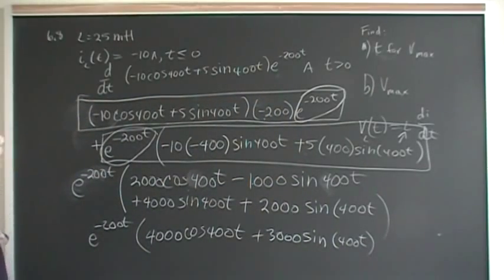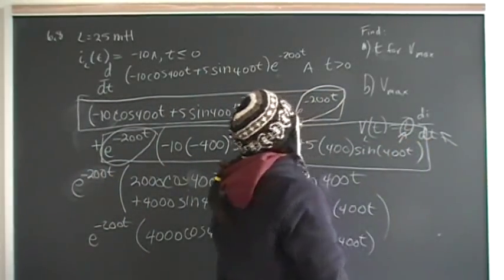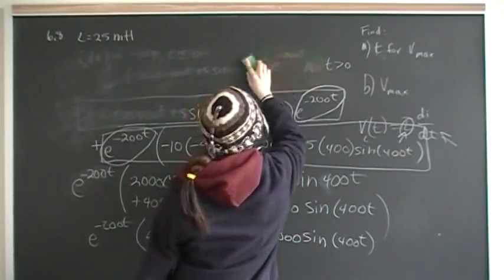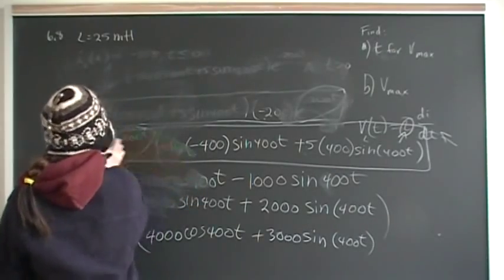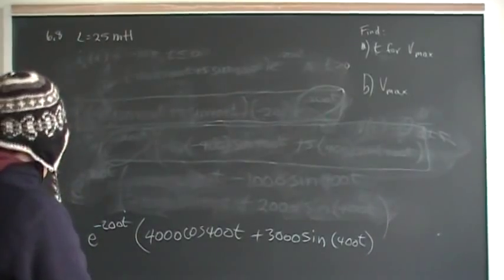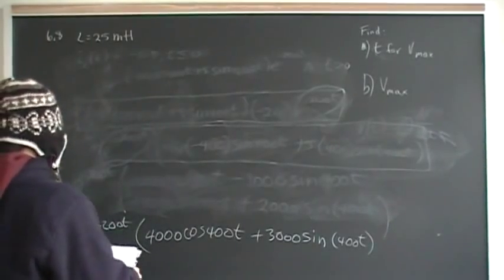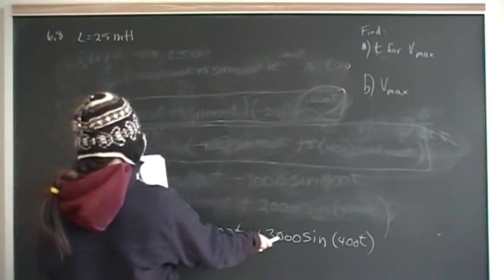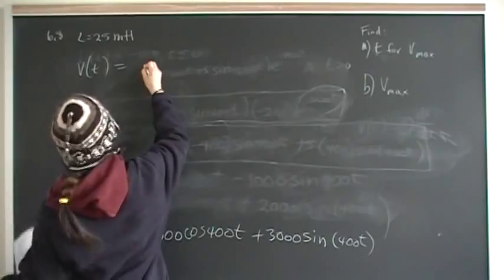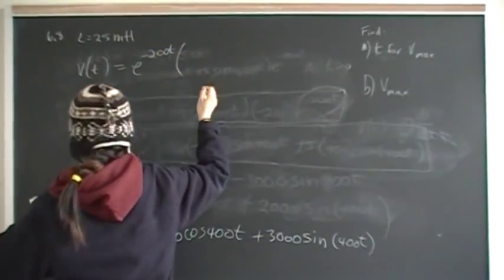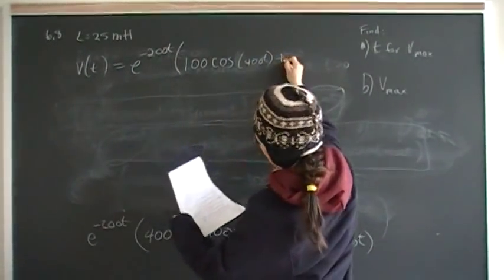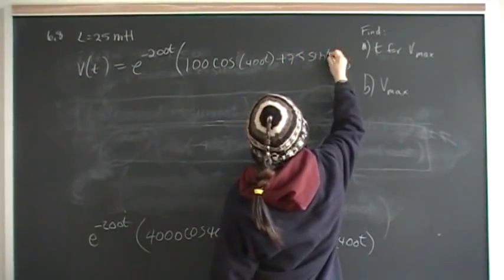Remember that was only dI/dt. Now we have to multiply through by 25 millihenries to get the actual voltage. Multiplying 4000 by 25 millihenries gives 100, and 3000 by 25 millihenries gives 75. So the official voltage function is V(t) equals e to the minus 200t times 100 cosine 400t plus 75 sine 400t.